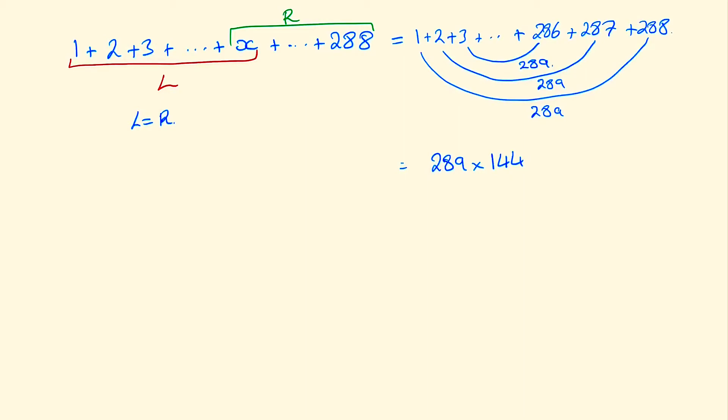Now if we think about what the left side is equal to, so the left side is 1 plus 2 plus 3 up to x take away 2 plus x take away 1 plus x. And we can apply the same technique that we did with the sum from 1 to 288. So we can say well what is 1 plus x? Well that's x plus 1. What is 2 plus x minus 1? Well that's also x plus 1. And what is 3 plus x minus 2? That's also x plus 1. So in total here we have x plus 1. And how many times does it appear or how many pairs are we making? Well we're making x over 2 pairs because we have x terms and therefore x over 2 will be the number of pairs. So this becomes then x squared plus x all over 2.